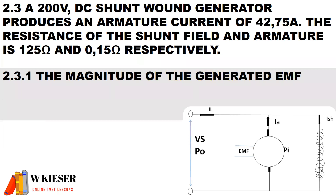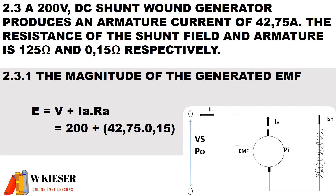For our first calculation, a 200 volt DC shunt wound generator produces an armature current of 42.75 amps. The resistance of the shunt field and armature is 125 ohms and 0.15 ohms respectively. For a generator, we are supplying electrical supply and therefore producing armature current. To calculate the generated EMF: E equals V plus IA times RA. The terminal voltage is 200 volts, the armature current is given, and the armature resistance is 0.15 ohms. Therefore the generated EMF is 211.65 volts.